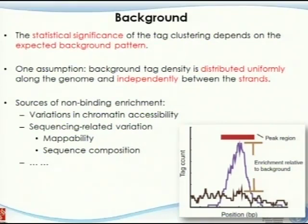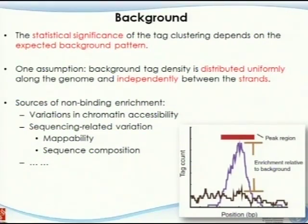There are many different sources of non-binding enrichment. This is not a binding event, but in the input sample — which is non-binding — you can also see this type of enrichment, and that happens a lot in real data. If you look at ChIP-seq data for some no-IP (no immunoprecipitation) control samples, sometimes you also see peaks somewhere in the genome. There are many different ways this can happen.